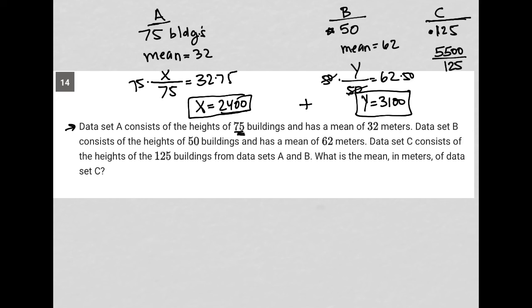All that's left is for me to go back to my calculator and divide 5500 by 125, and what I get is 44. So our answer here is 44.